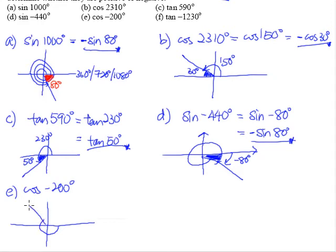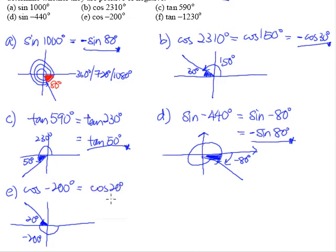Negative 200 degrees lands here, in the second quadrant going clockwise. The basic acute angle is 20 degrees, since 200 minus 180 equals 20 degrees. So cosine negative 200 degrees is the same as cosine 20 degrees.